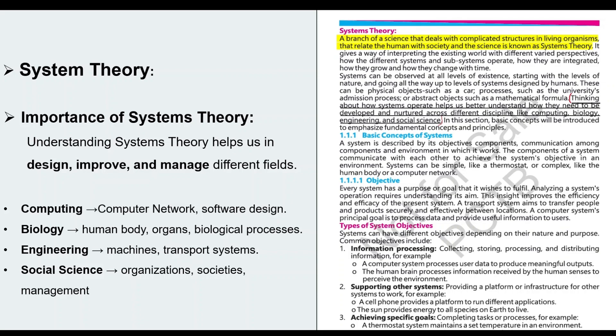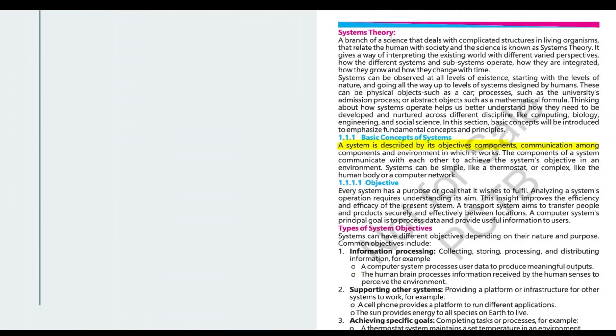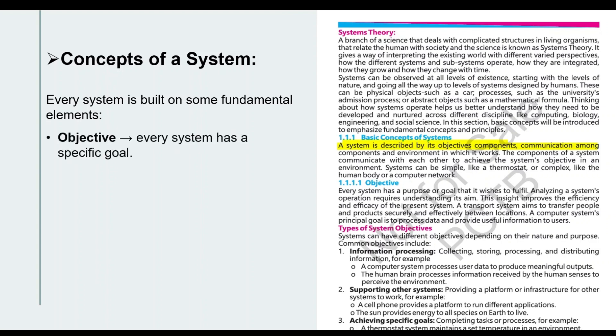Let's move to the next topic which is basic concepts of system. So students, every thing has some fundamental elements on the basis of which we understand them or clear concepts about them. The first one is objective. If you are developing or studying any system, the first thing should be objective.